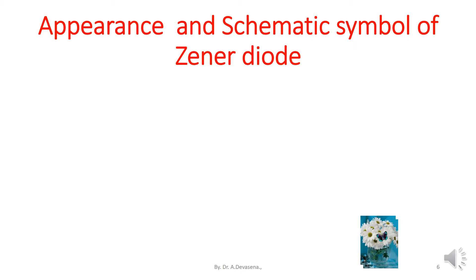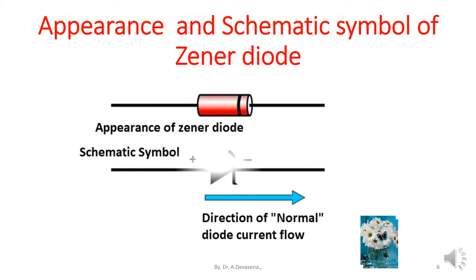Let us see the appearance and the schematic symbol of the Zener diode. The Zener diode has two terminals: the cathode terminal and the anode terminal. The terminal nearer to the black ring is the cathode terminal and the other terminal is the anode terminal. The schematic symbol of the Zener diode is also indicated here. The plus symbol indicates the positive terminal and the minus symbol indicates the negative terminal. The direction of the normal diode current flow is indicated here.